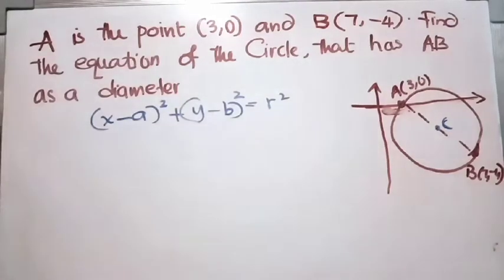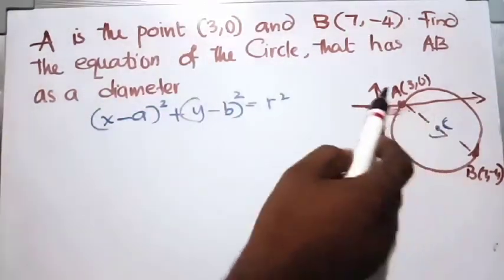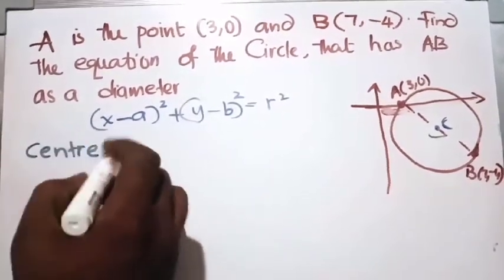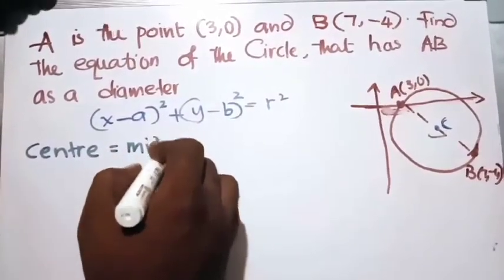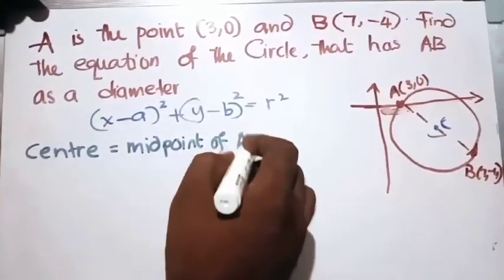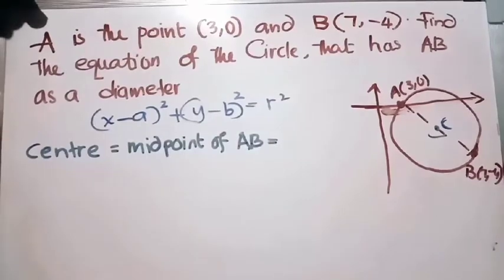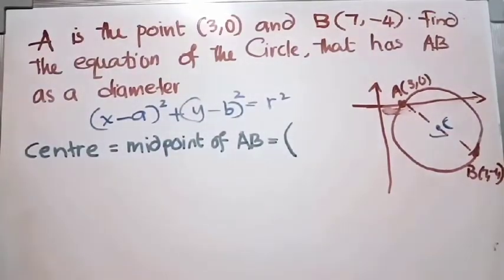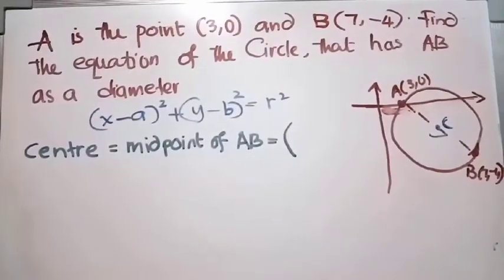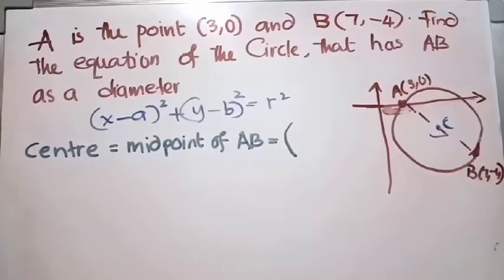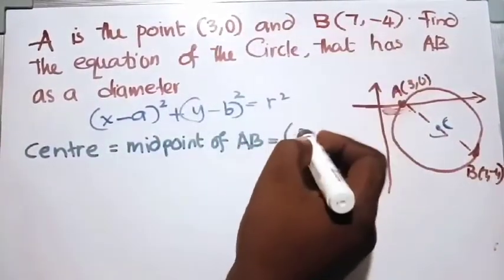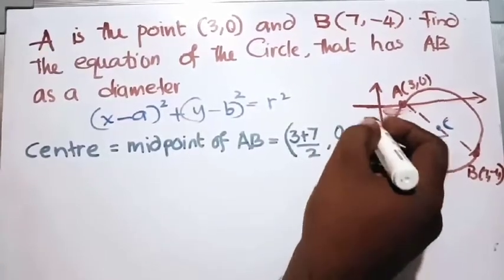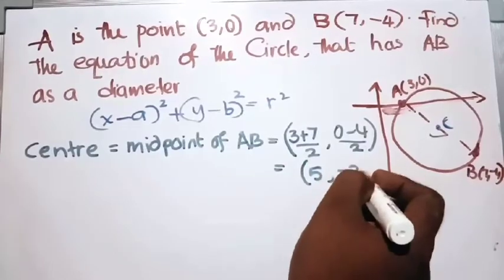In this question, the center of the circle C is the midpoint of AB. You know how to calculate the midpoint — it's the average of the x-coordinates and the average of the y-coordinates. So the x-coordinate is (3 plus 7) divided by 2, and the y-coordinate is (0 plus minus 4) divided by 2, giving us (5, minus 2) as the center.